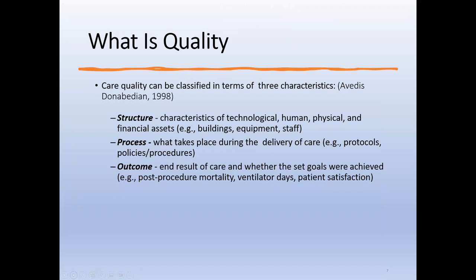Avedis Donabedian is someone I referenced in my dissertation and teach in my graduate-level healthcare quality course. His framework — structure, process, and outcome — doesn't have to be limited to healthcare. You can apply it to many domains within and outside of healthcare. Many errors and quality issues are not simply 'Al screwed up.' Usually it's a whole bunch of things lining up in a bad way.